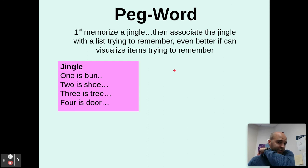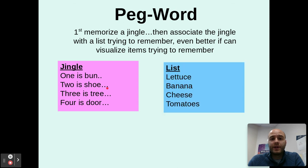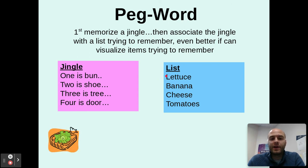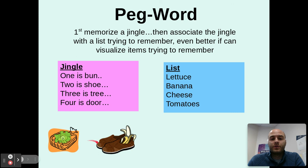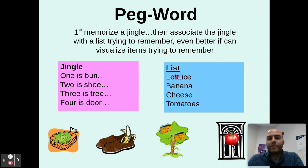Next up is pegword. To use pegword, you first memorize a simple jingle such as: one is bun, two is shoe, three is tree, four is door. You then associate that with a list of things you're trying to remember, especially if you can visualize them. For example, for a grocery list: one is bun — I put lettuce on the bun; two is shoe — I envision a banana sticking out of the shoe; three is tree — I imagine cheese up in the tree; four is door — I imagine throwing a tomato at the door. That helps me remember my list.